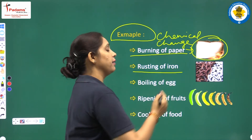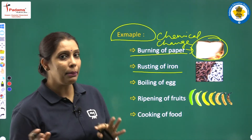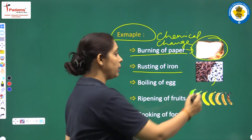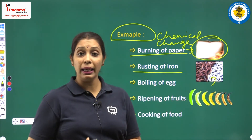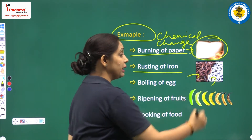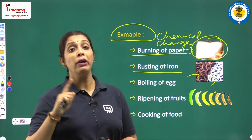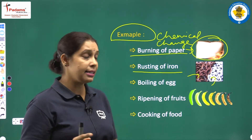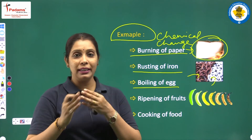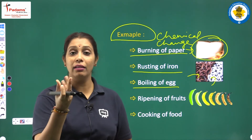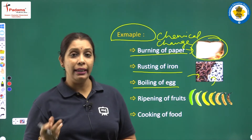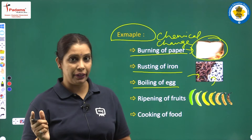Rusting of iron is a chemical change. Pahle jo iron chain hai, wo aisa hota hai. But when we leave it for some time in moist conditions, it becomes red-brown in color — it develops a layer of rust. And boiling of egg — when we break an egg, we have that liquid sticky substance. But when it gets boiled, it becomes solidified.